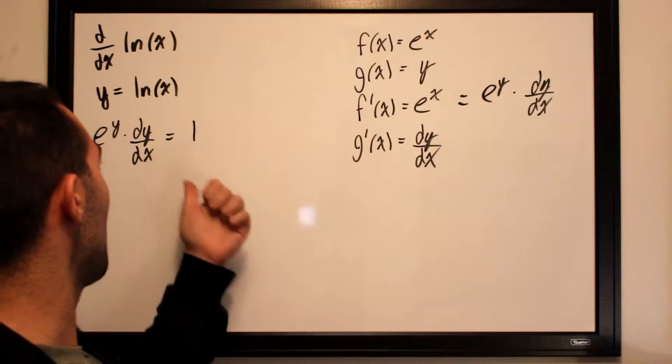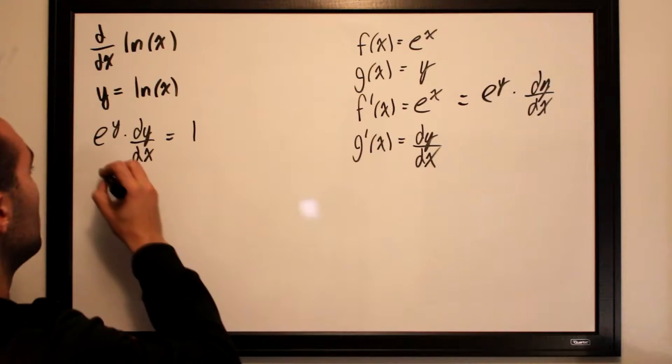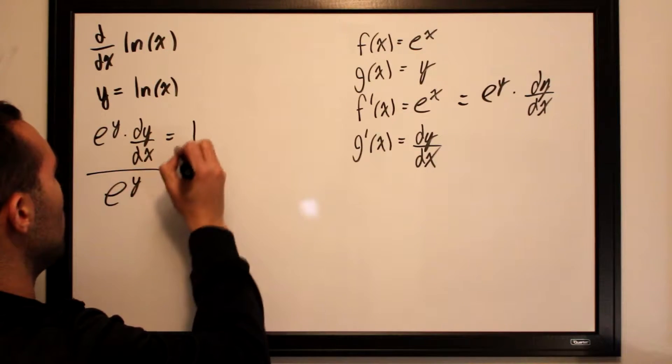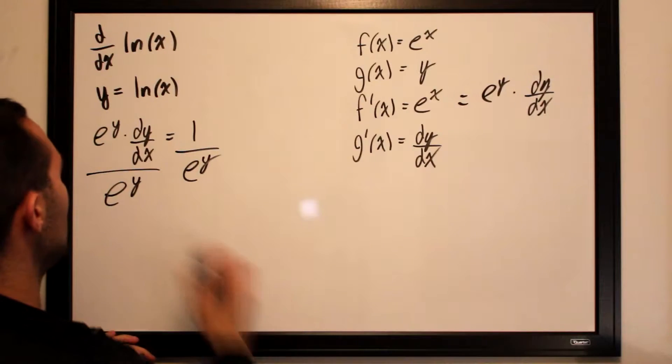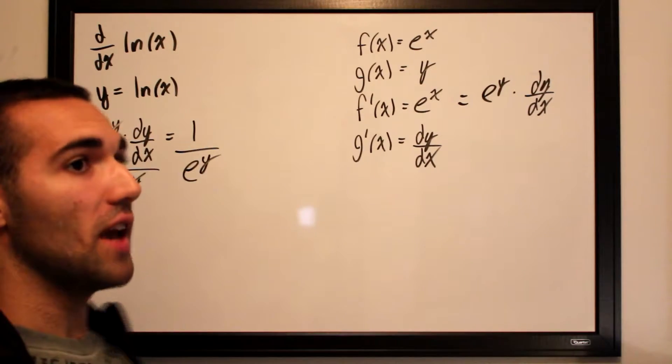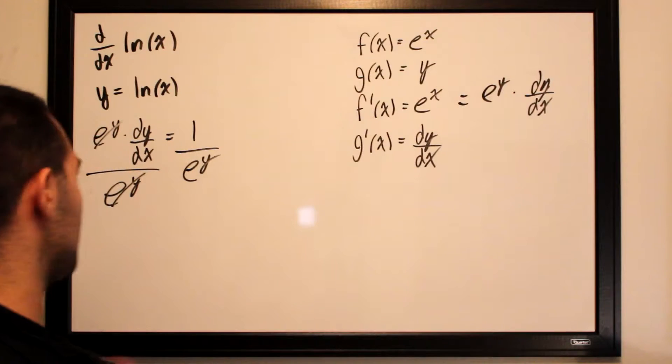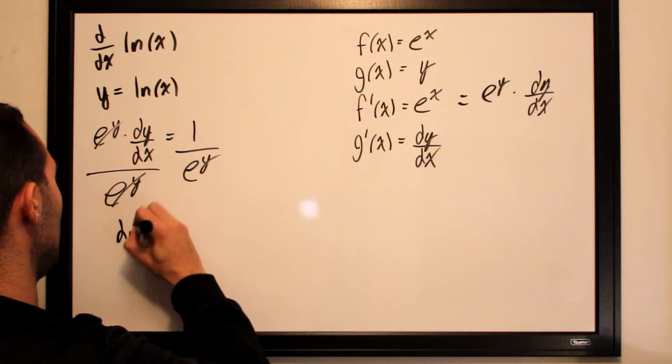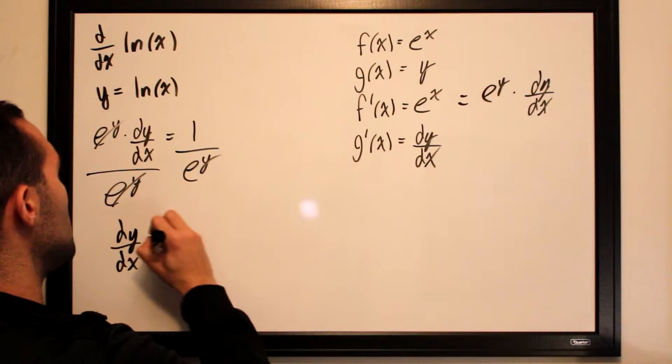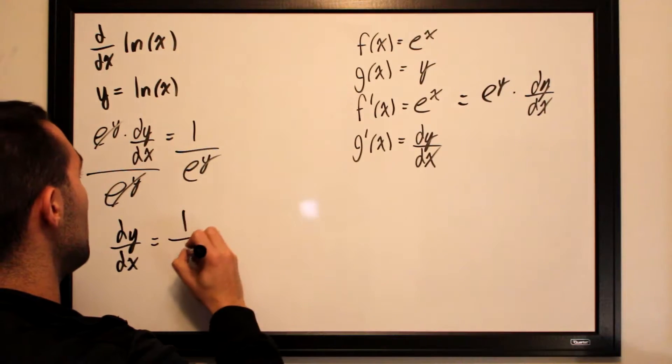So what we'll do there is divide both sides by e to the y. And all we will be left with is dy by dx on one side over e to the y. So dy by dx is equal to 1 over e to the y.